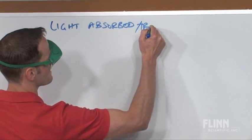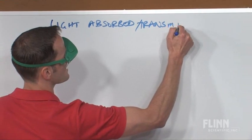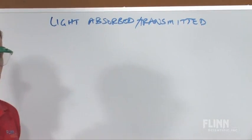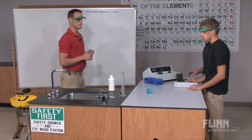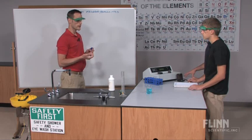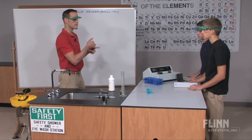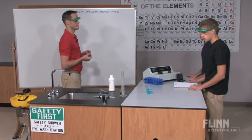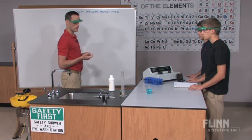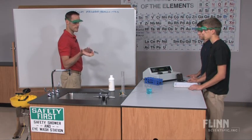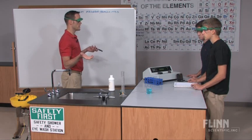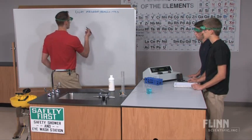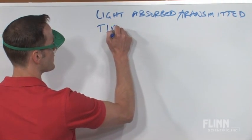Students also suggest measuring the amount of time it takes to go from colored to clear, because they recognize a reaction is occurring. They saw a color change that's getting less apparent over time. So we'll be looking at light absorbed and time as key measurements in this experiment.